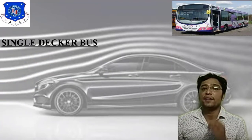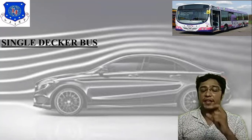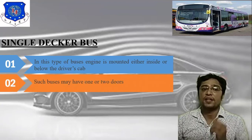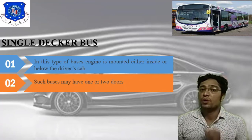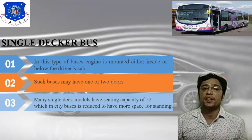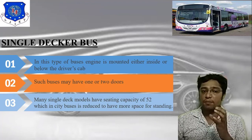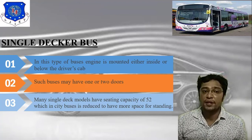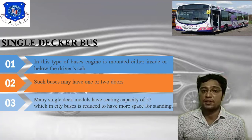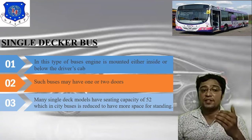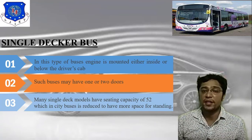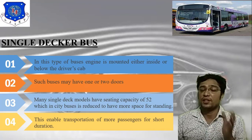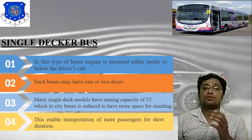In a single deck bus, the engine is mounted either inside or below the driver's cab. Such buses may have one or two doors. Many single deck models have a seating capacity of 52, which in city buses is reduced to provide more space for standing passengers. This enables transportation of more passengers for short durations.